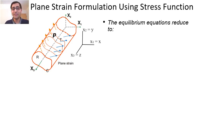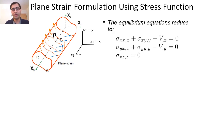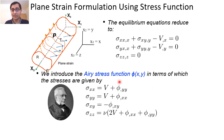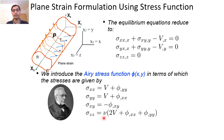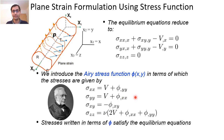For the plane strain case, the equilibrium equation reduces to the standard form. We introduce the Airy stress function similar to the plane stress case, but since sigma_zz is not zero, the Airy stress function is defined as nu multiplied by (2v plus phi,xx plus phi,yy). This is the only difference between the Airy stress function for plane strain versus plane stress. Stresses written in terms of phi satisfy the equilibrium equation.